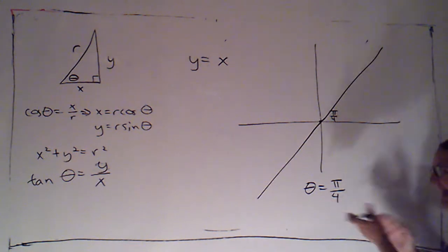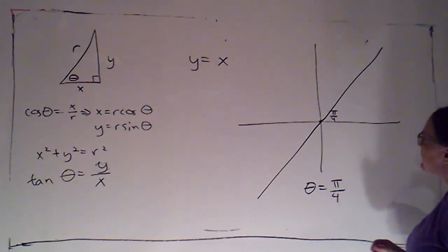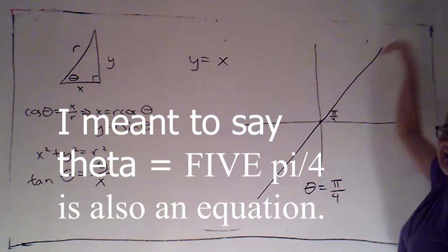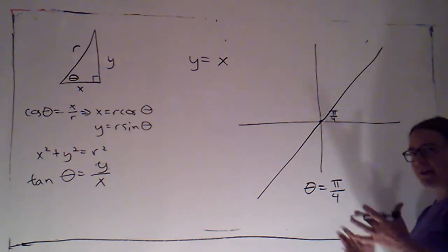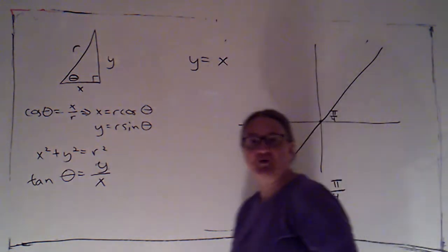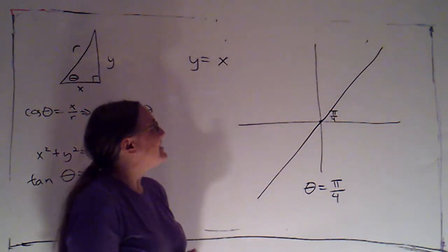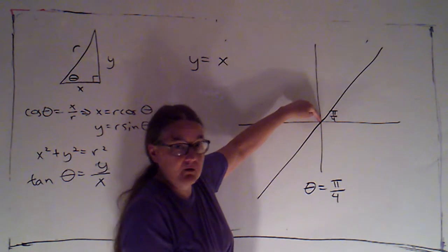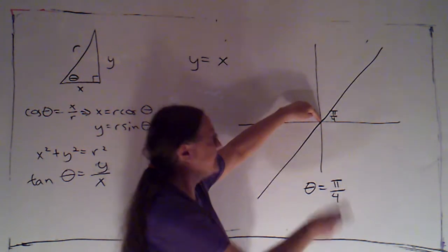You'll notice I said an equation is theta equals pi over 4, because theta equals pi over 4 would also be an equation for this. So we've got some flexibility in our polar coordinates. That does bring up an interesting point. So I could look at the origin here, and I could say r is 0, theta is pi over 4, so it's on the graph.